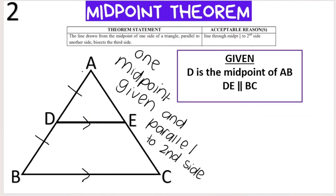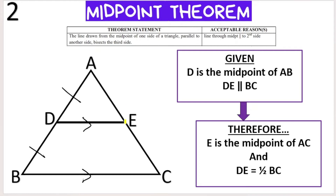Scenario number two: the given information is that only one midpoint is given — they tell me D is the midpoint of AB — but they don't tell me E is the midpoint of AC. What they do tell me is that DE is parallel to BC. From this given information we can conclude that E is the midpoint of AC, so AE and EC are equal, and we can also conclude that DE is half the length of BC.